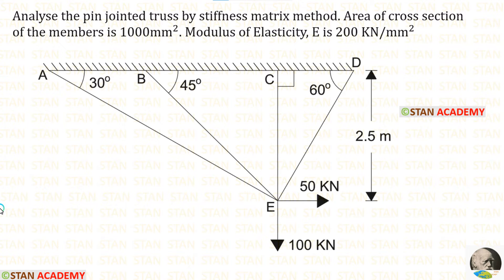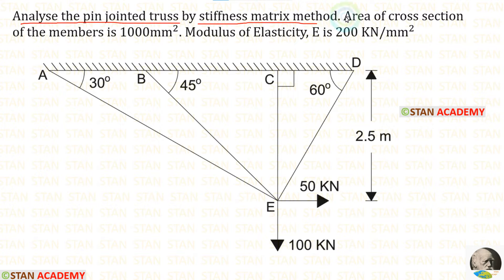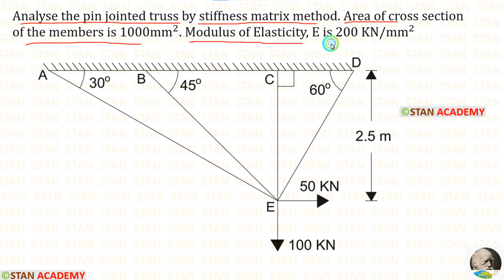Hello everyone. Today we are going to analyze some pin-jointed truss problems. Let us read the question one time: Analyze the pin-jointed truss by stiffness matrix method. The area of cross section of the members is 1000 mm square, and the modulus of elasticity is equal to 200 kilo newton per mm square.